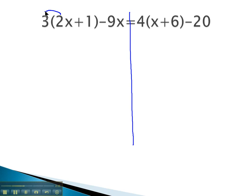With a number in front of parentheses, we know we can distribute, which will give us 6x plus 3 minus 9x. On the right side, we can distribute the 4, giving us 4x plus 24 minus 20.